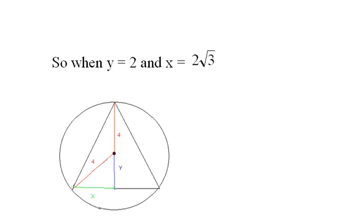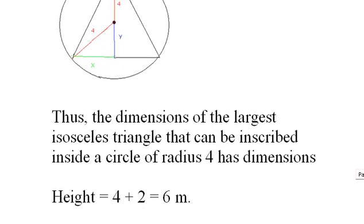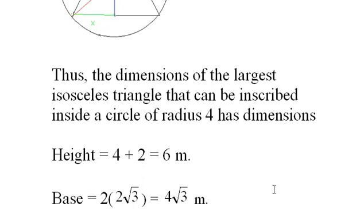I was asked for the dimensions of this, so obviously I have to add four to y to get the altitude, the height, and I have to double x to get the base. Thus, the dimensions of the largest isosceles triangle that can be inscribed inside a circle of radius four has dimensions of six meters as a height and a base of four times the square root of three meters.